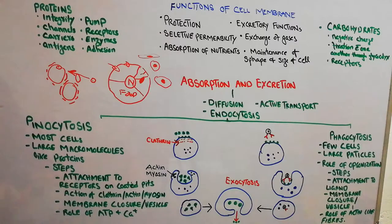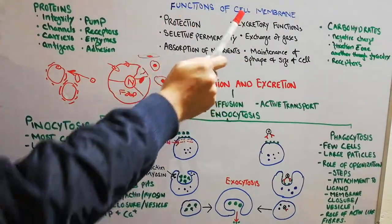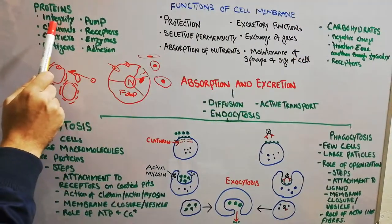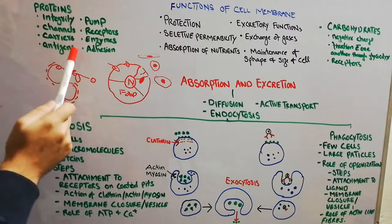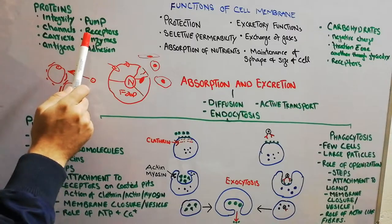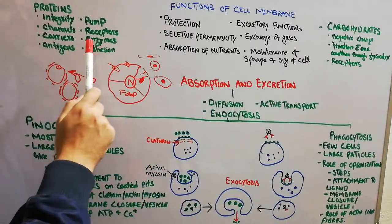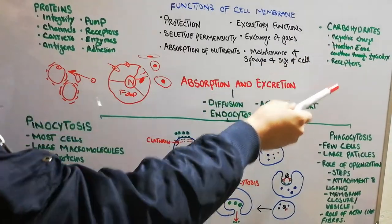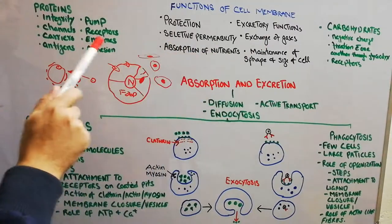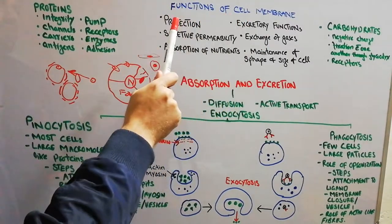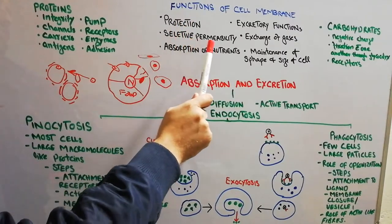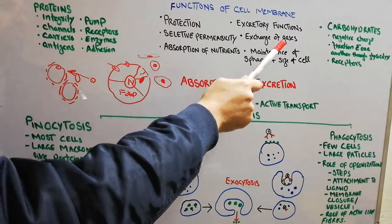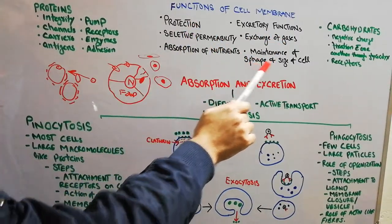Let's recap what we discussed. The functions of the cell membrane basically come from the functions of proteins and carbohydrates. Proteins help with integrity, provide channels for transfer, act as carriers, antigens, pumps, receptors for hormones and drugs, enzymes, and help in adhesions. Carbohydrates provide a negative charge, fix the cells, and act as receptors. Together they give properties to the cell membrane: protecting the cell, providing selective permeability, helping in absorption and excretion, helping in exchange of gases, and providing a specific shape and size.